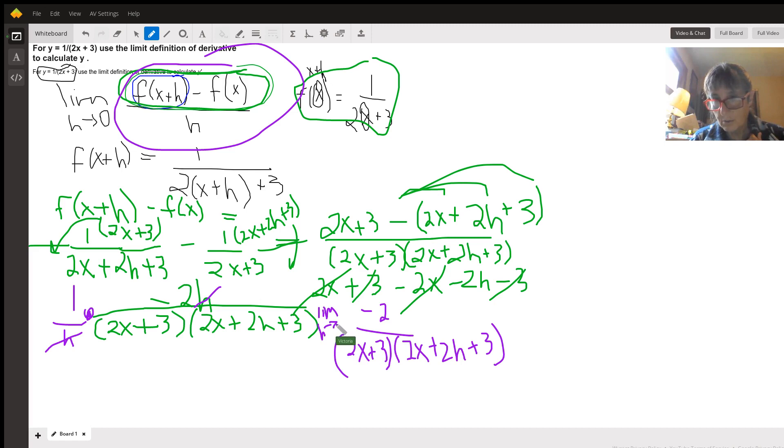0, which means this term goes away. And this ends up being negative 2 over 2x plus 3 times 2x plus 3, which is 2x plus 3 squared. And that is the correct answer.